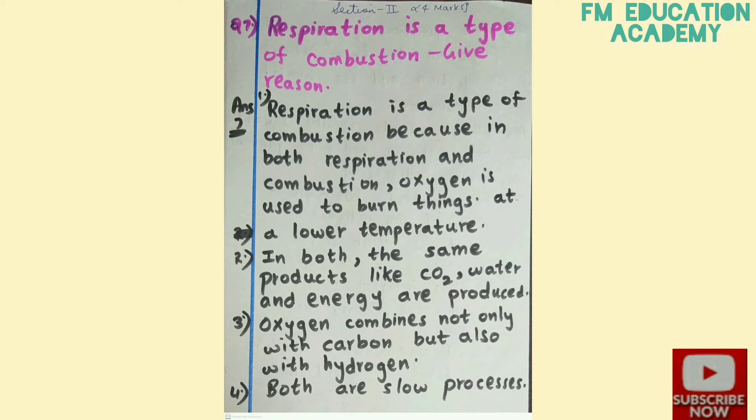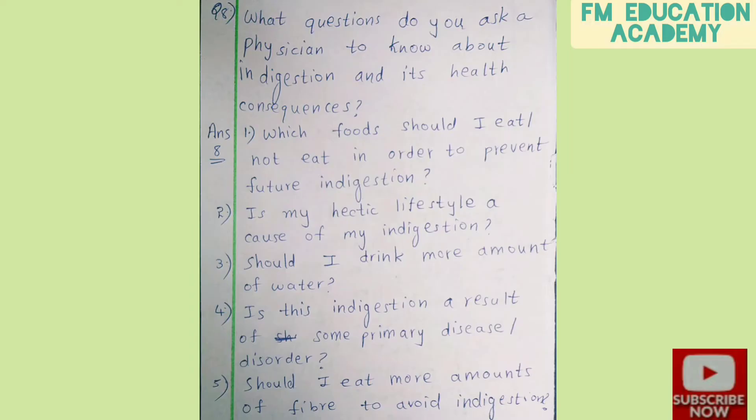Fourth question: respiration is a type of combustion — give reasons. Respiration is a type of combustion because in both respiration and combustion, oxygen is used to burn things. In both processes, the same products — carbon dioxide, water, and energy — are produced. Oxygen combines not only with carbon but also with hydrogen in both processes.